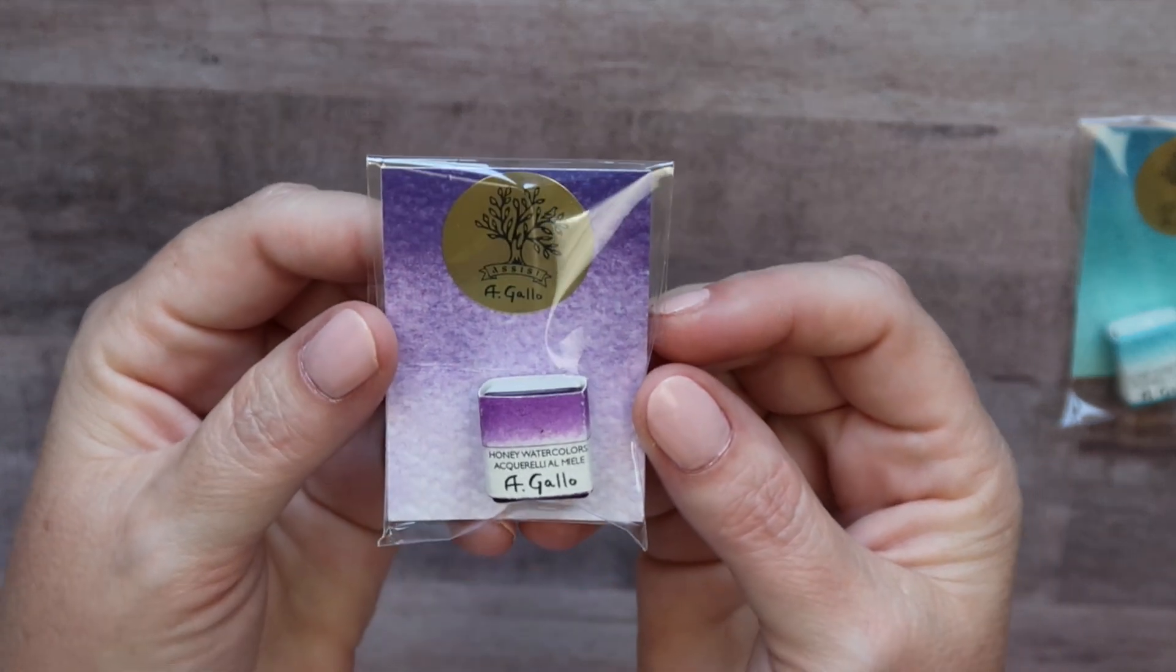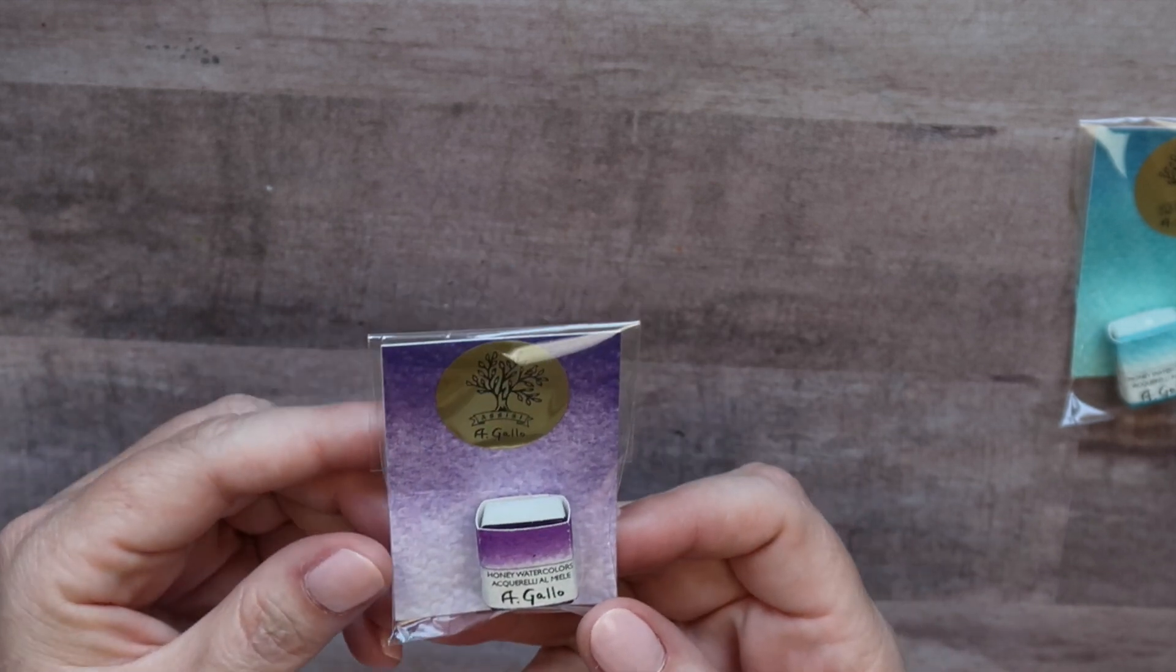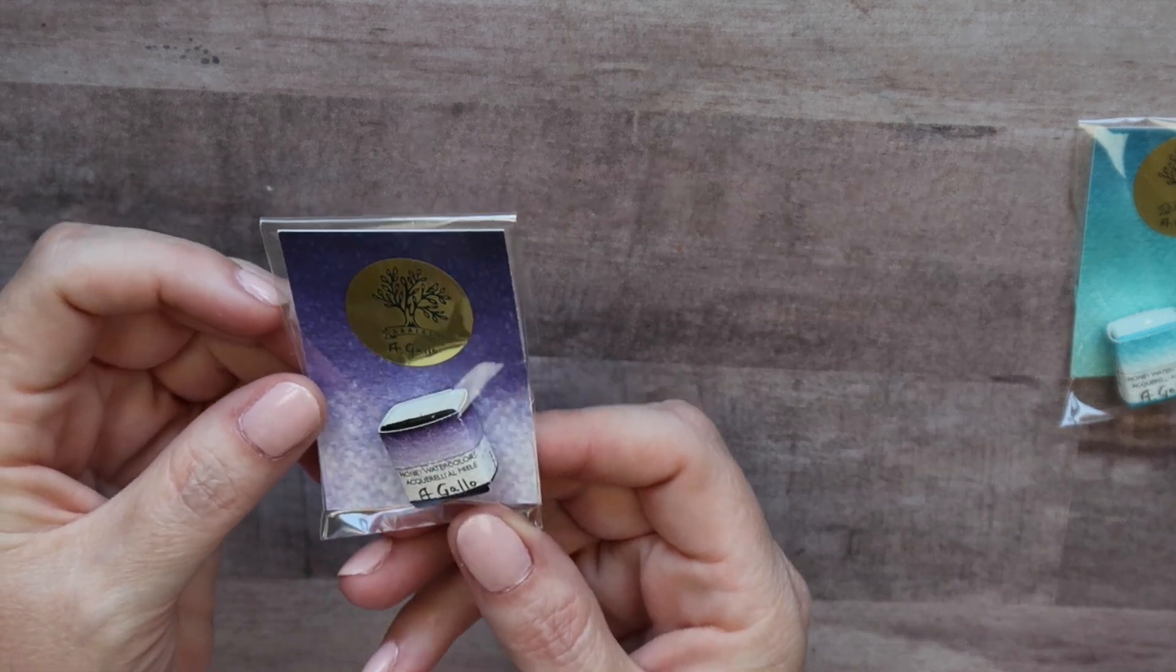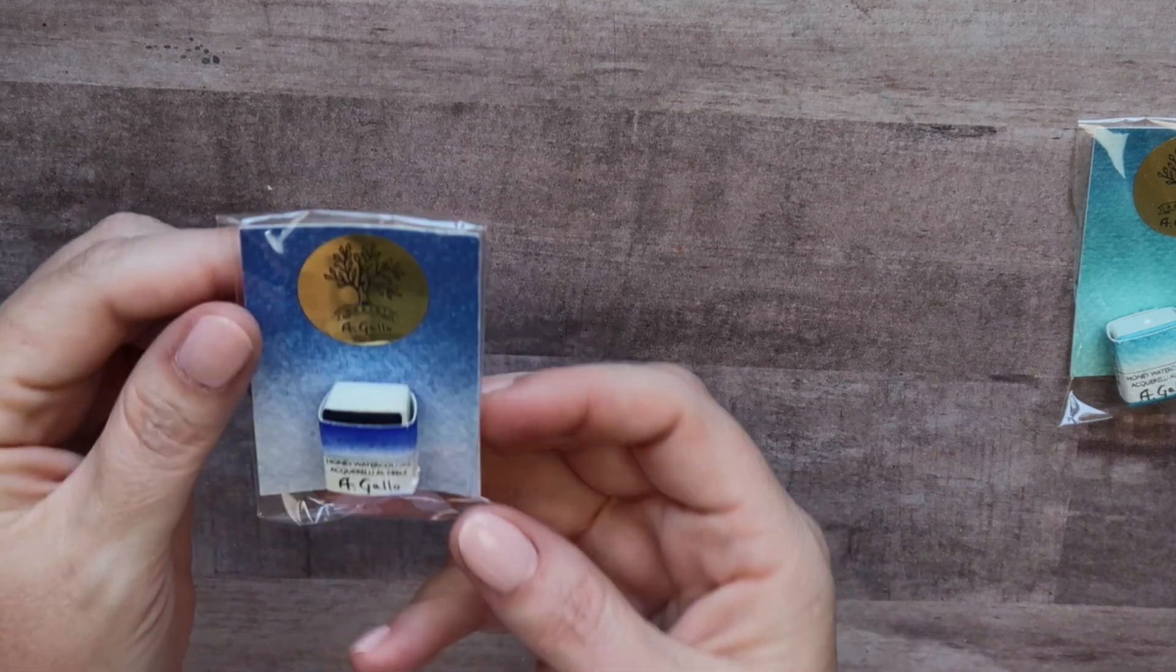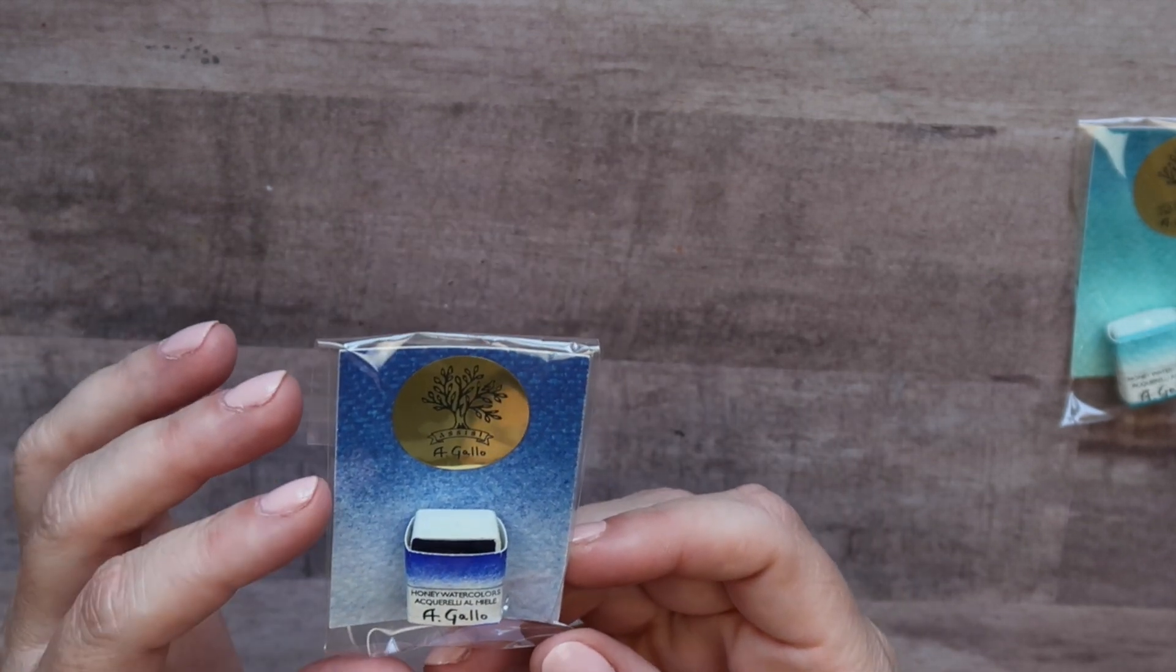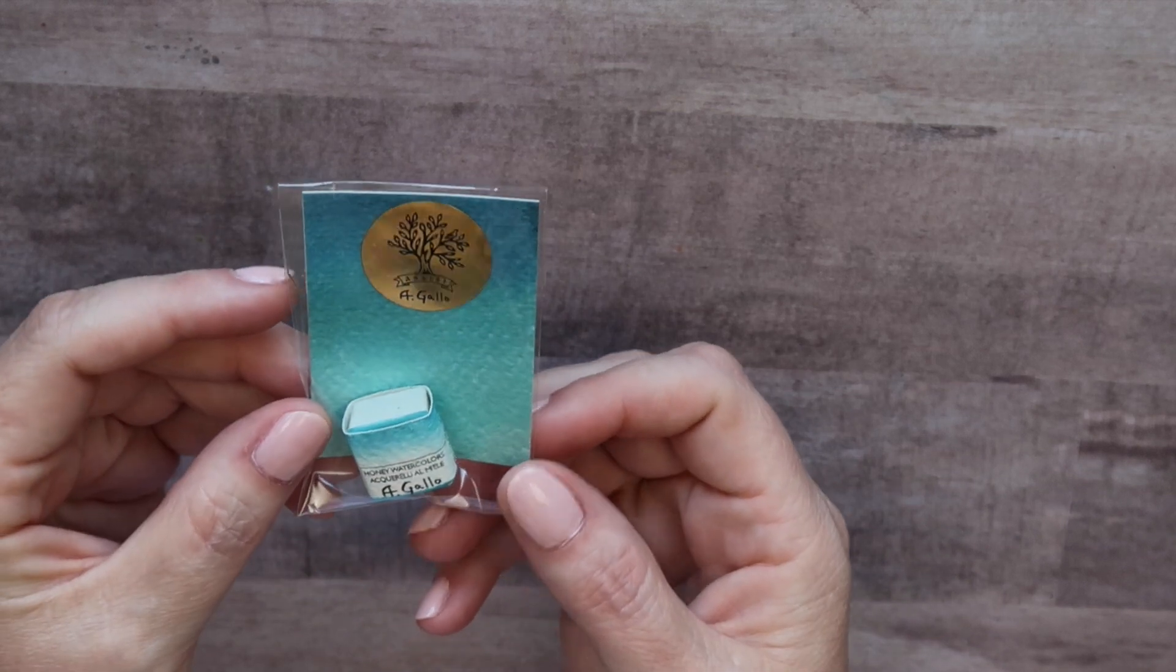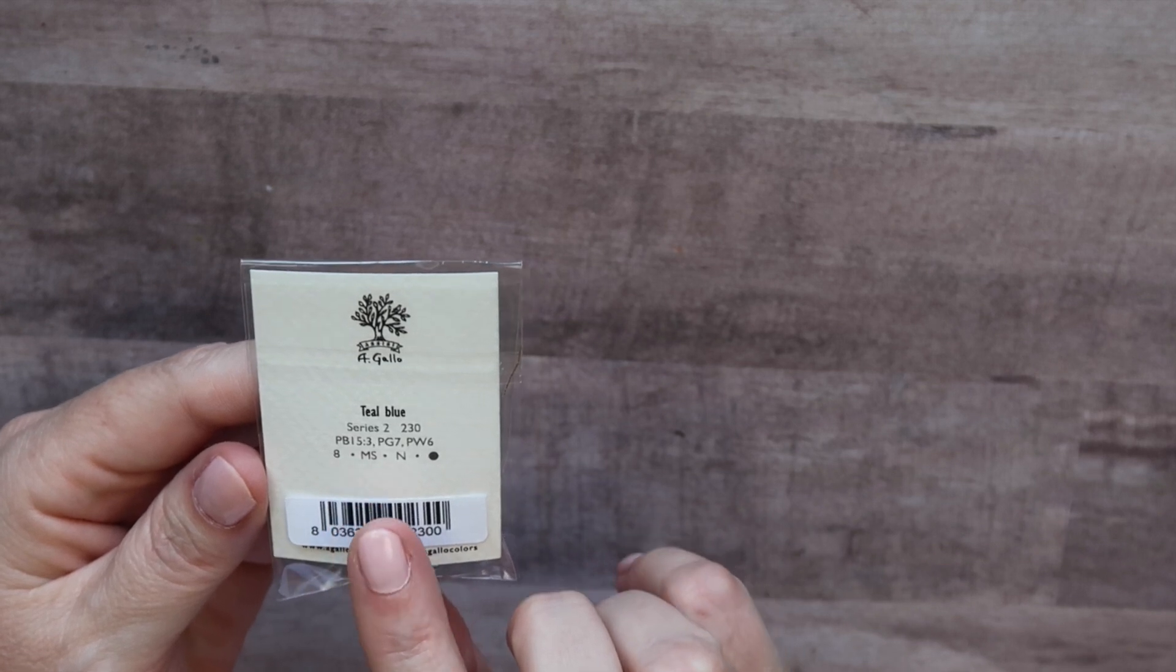Next is a gorgeous violet color. This is mineral violet. This is PV16. So really pretty. Then next is dioxazine violet and this is made from PV37. Really pretty purple. Next is ultramarine blue dark. This is made from PB29 and I had a viewer say that their ultramarine is really really nice so I wanted to try that. And then this is teal blue and this is made from PB15 colon 3, PG7 and PW6.